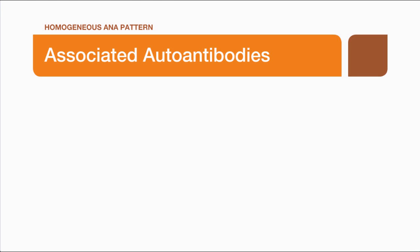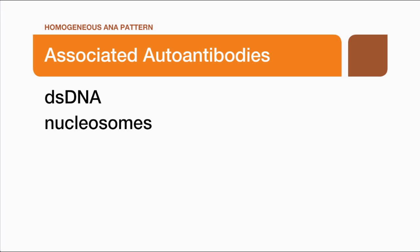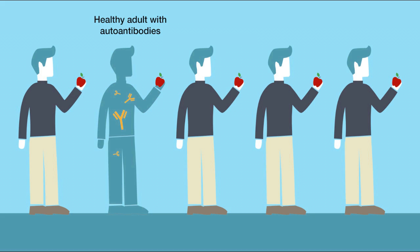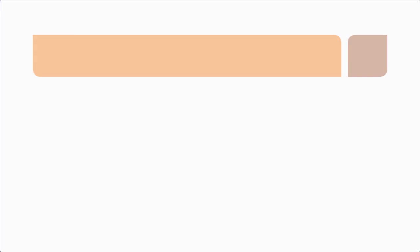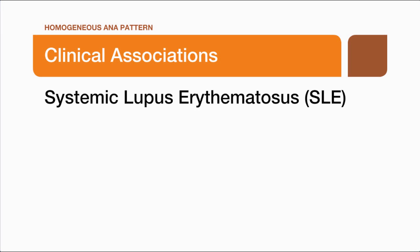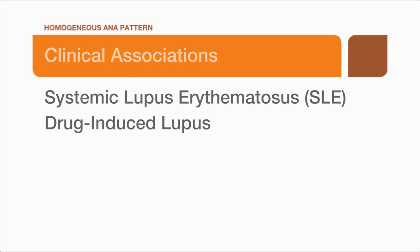The autoantibodies typically associated with this pattern are dsDNA, nucleosomes or chromatin, and histones. It is also important to note that healthy people can have a positive ANA IFA. The ANA test is to be used as an aid in diagnosis.